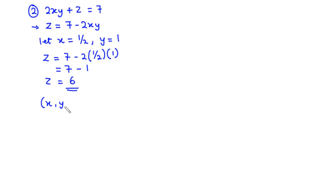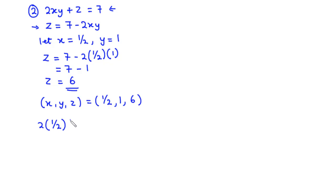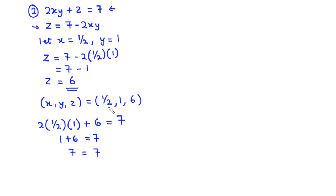So, for the x, y, z triple, we have (1/2, 1, 6). Substituting into the original equation: 2 times 1/2 times 1 plus 6 equals 7. That gives 1 times 1 plus 6, which is 1 plus 6 equals 7. Since the left-hand side equals the right-hand side, (1/2, 1, 6) is a solution to the linear equation 2xy plus z equals 7.